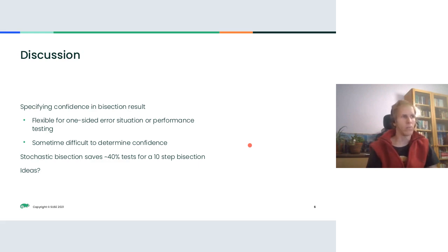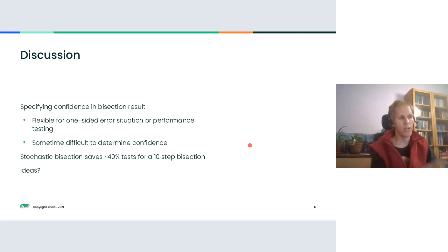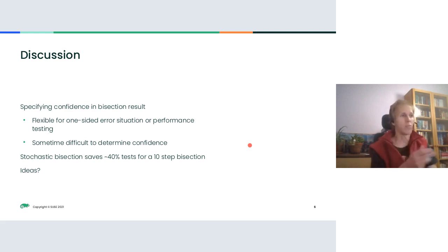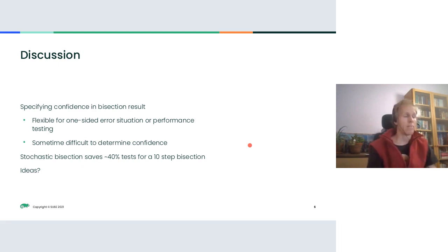This model also works for performance testing. If you do a benchmark, the result is more on the bad side or more on the good side, and by the distance from the tipping point and by the variability of the benchmark results you can say how confident you are that the commit is good or bad. If the result is close to the tipping point, you might say you're only 55% sure it's good, and the bisection algorithm takes this into consideration, slightly modifying the probabilities.